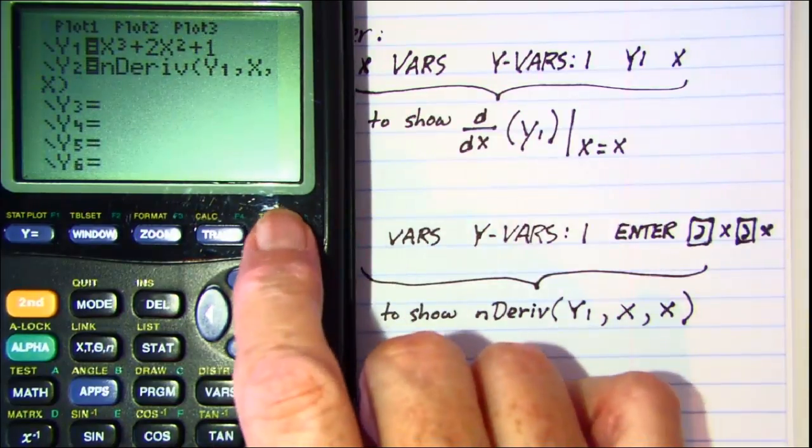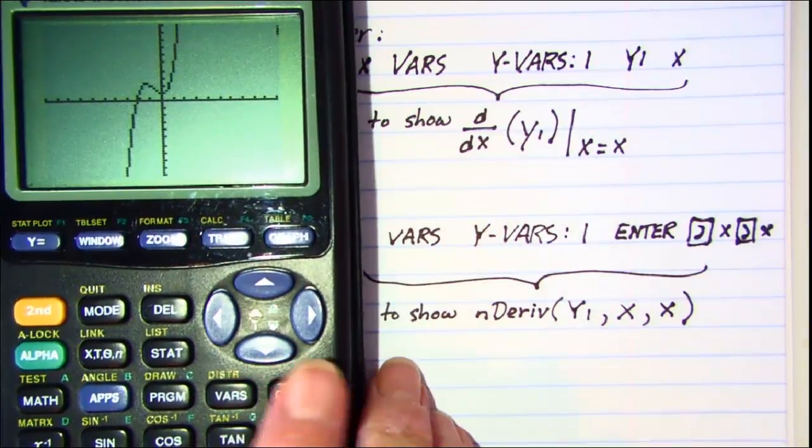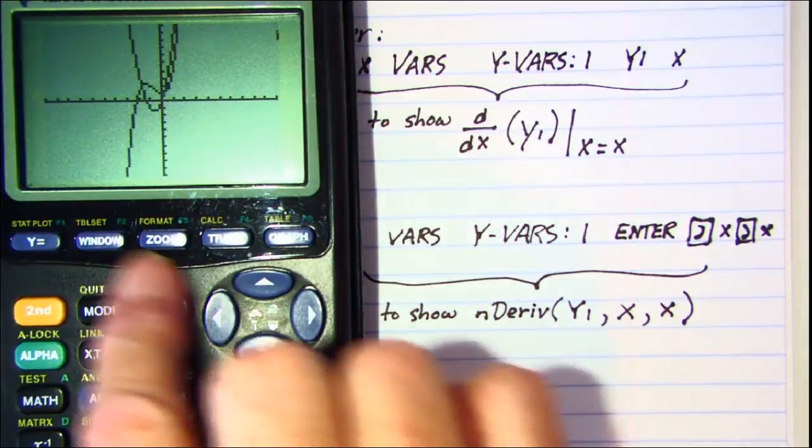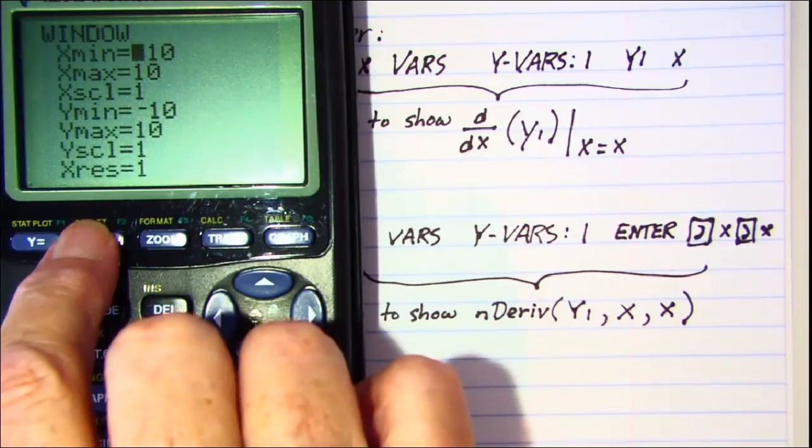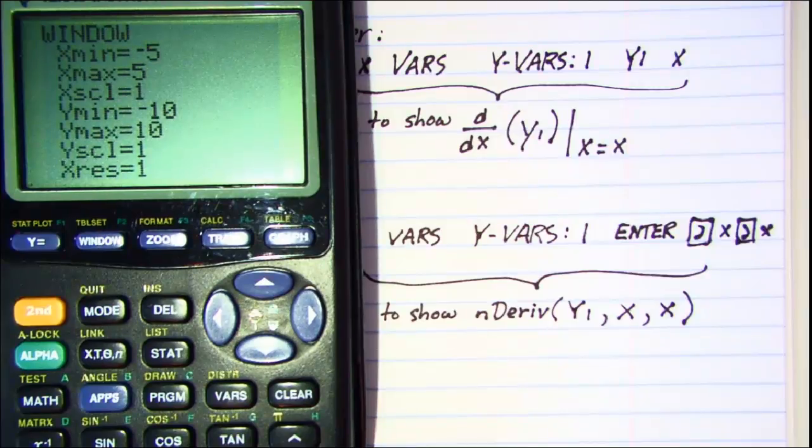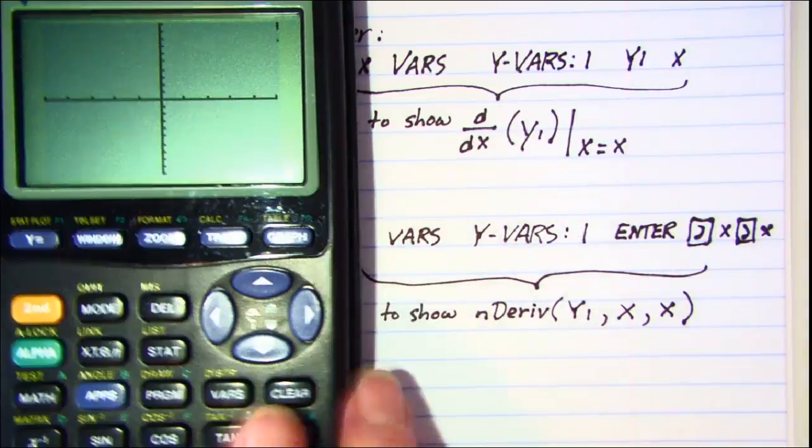Now when we hit graph we'll get our function right there. So let me go ahead and change my window on this one to a negative 5 minimum and a 5 max, so we have less blank space.